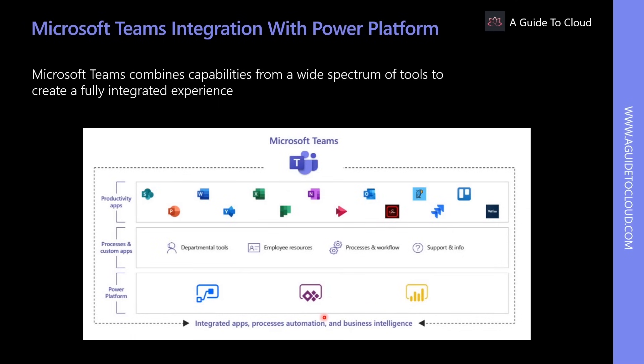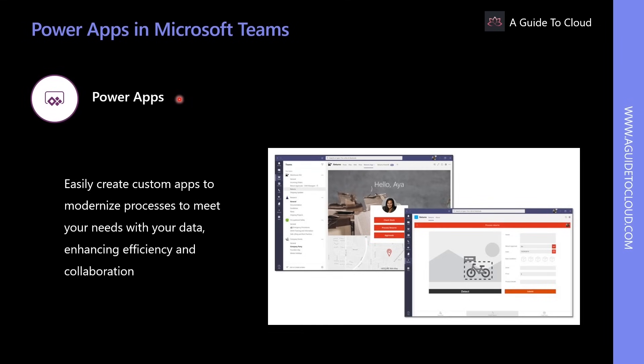An organization can streamline business processes with Power Platform tools like Power Apps and Power Automate. Power Apps is a high-productivity application development platform that can be used to customize everything from simple SharePoint forms to immersive end-to-end solutions. Combined with Microsoft Teams, Power Apps can be used to build a modern workplace through custom tabs and apps with little to no code.